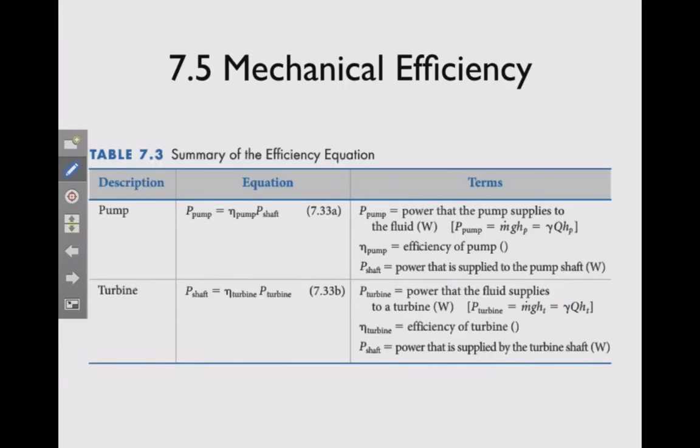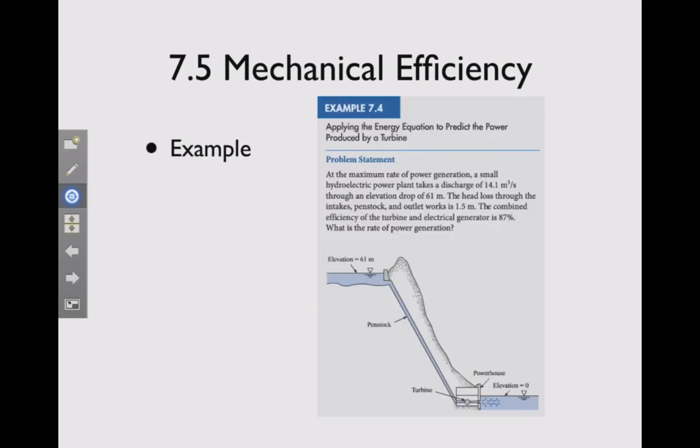So those are pretty easy to deal with. Remember these equations. It's pretty straightforward. The actual pump power that comes out of a pump is going to be the efficiency factor times the power that is supplied to the pump shaft. So this η sub pump is going to be the reduction in efficiency due to that particular pump, and similarly for a turbine. And there are a couple of examples showing how you would apply these efficiencies in a particular problem. Example 7.4 is a good example. Okay, that's it for power and mechanical efficiency.